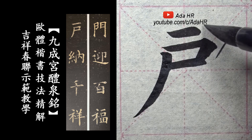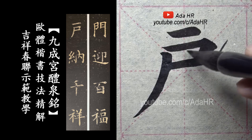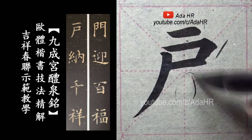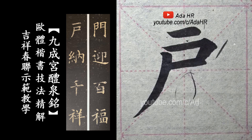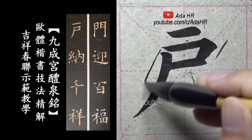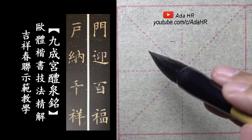横，点不要太长，相对要短一点，间距不要太大。向空间大一点，上紧下松。斜，至于不要太弯。纳。